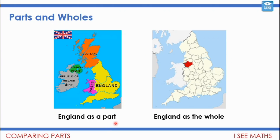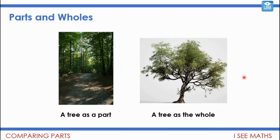Let's think about parts and wholes. England is a part of the United Kingdom — it's quite a large part — and the United Kingdom is the whole. But I could think of England as the whole, with Cheshire as a part of England. Similarly, a tree is a part of a forest, but I could think of a tree as the whole, and say the trunk is a part of a tree.